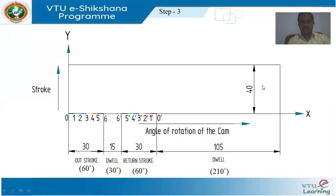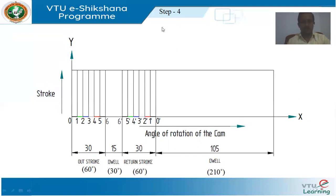Step 4: After dividing the outstroke and return stroke dimensions into 6 equal parts, through all these divisions draw vertical lines parallel to the stroke axis up to the 40 mm locus. Through points 0, 1, 2, 3, 4, 5, 6 draw vertical lines up to 40 mm locus; and from 6-dash, 5-dash, 4-dash, 3-dash, 2-dash, 1-dash, and 0-dash, also draw vertical lines up to the 40 mm locus.